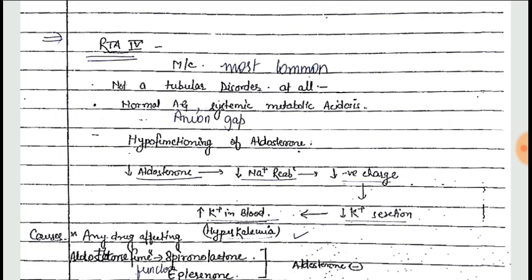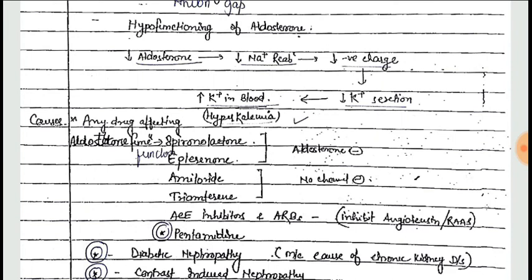Type 4 renal tubular acidosis is the most common type. There is no tubular structural disorder, the anion gap is normal, and there is metabolic acidosis. The cause is hypoaldosteronism — decreased aldosterone leads to decreased activity of the sodium-potassium-hydrogen pump on the collecting tubule, so sodium absorption decreases, potassium secretion decreases, and H+ secretion decreases, resulting in hyperkalemia and acidosis.